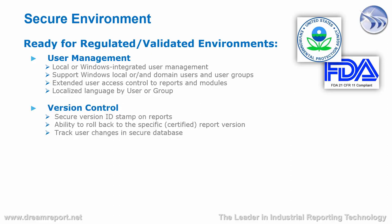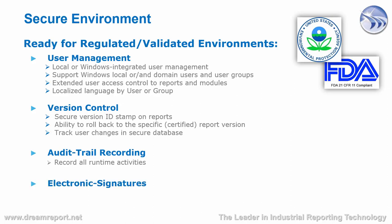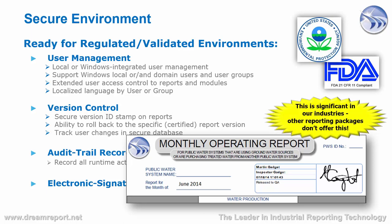Additionally, DreamReport includes version control, which is a necessary feature in highly regulated industries such as life sciences and biotech. With the version control feature, you have the ability to include a version ID stamp on specific reports. If version control is enabled and a user makes a change to a report in Studio, before they can save the report they will be required to check it in with a detailed comment. DreamReport keeps track of all those changes and provides the ability to roll back or roll forward at any time to a specific or certified version of that report. The Life Sciences add-on option provides additional functionality, including audit trail recording of all activities by all users at runtime, and an electronic signature option for the implementation of electronic signatures on PDF reports.